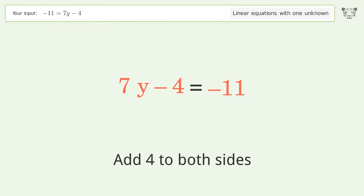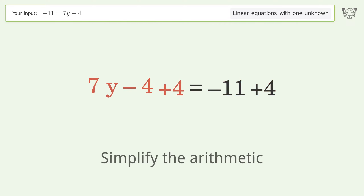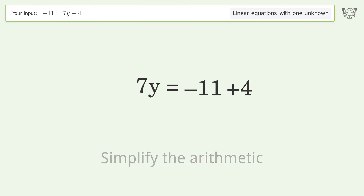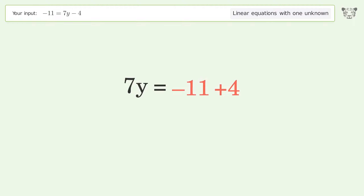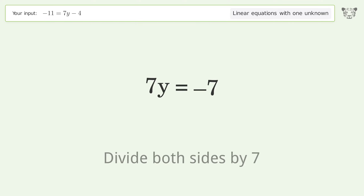Simplify the arithmetic. Then isolate the y by dividing both sides by seven.